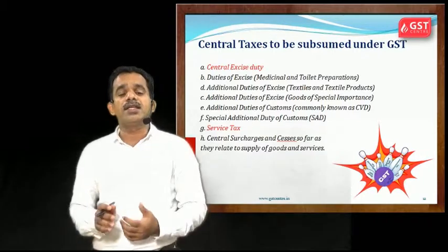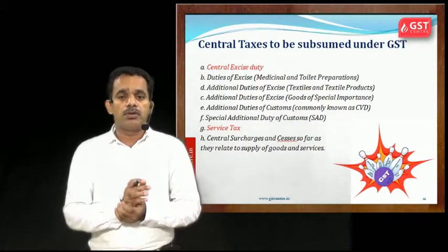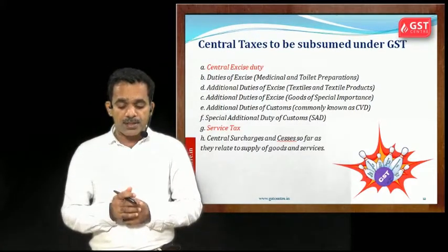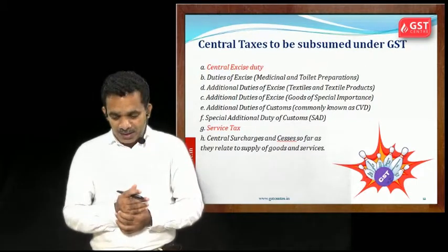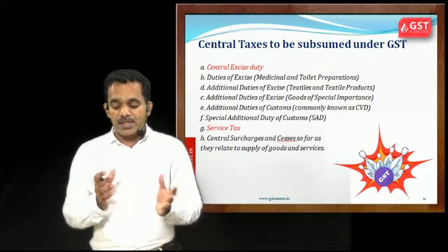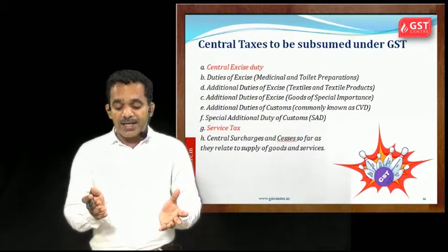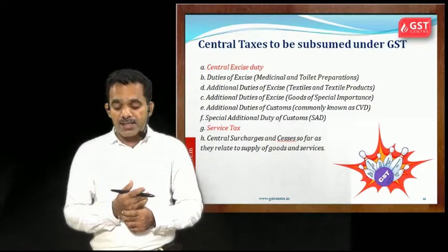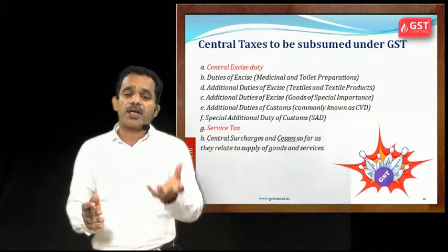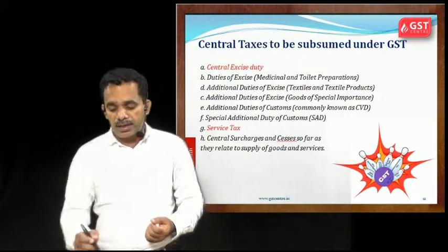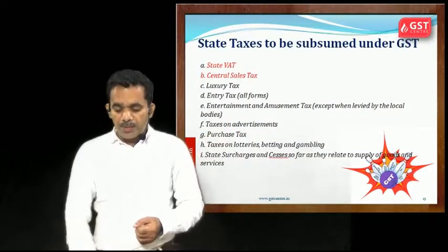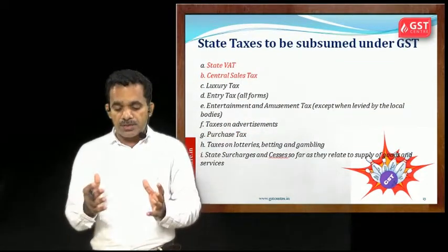The central taxes subsumed into GST include: Central Excise Duty, Duties of Excise on medicinal and toilet preparations, Additional Duties of Excise on textiles and textile products, Additional Duties of Excise on goods of special importance, Additional Duties of Customs (commonly known as CVD), Special Additional Duties of Customs, and Service Tax. All these taxes previously managed by the central government were subsumed into GST.